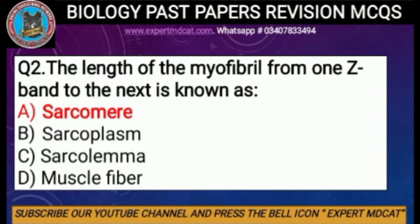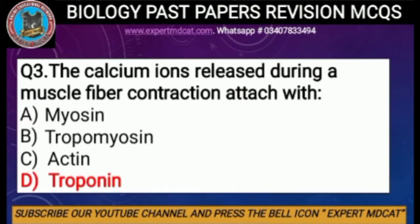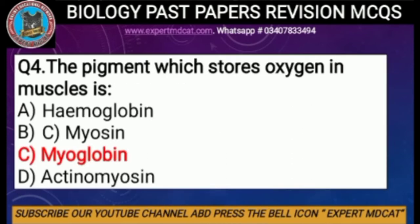Question number three: the calcium ions released during a muscle fiber contraction attach with — options are myosin, tropomyosin, actin, or troponin. The correct option is D, troponin, because troponin has three binding sites: actin, tropomyosin, and calcium ions. So the correct option is troponin.